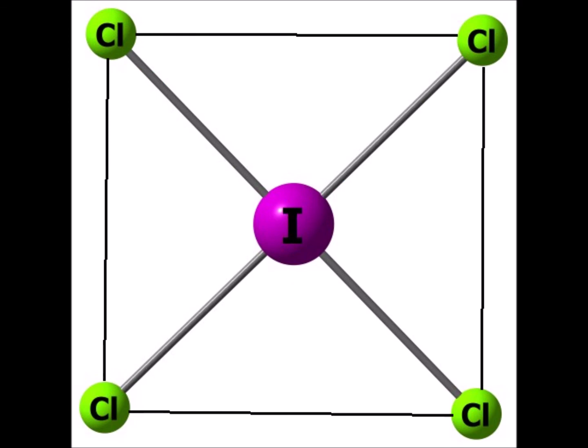Four bonding pairs and two lone pairs gives us the square planar arrangement. It is equivalent to octahedral if we remove two of the positions that are 180 degrees away from each other. The central iodine atom having six electron domains is therefore d2sp3 hybridized.